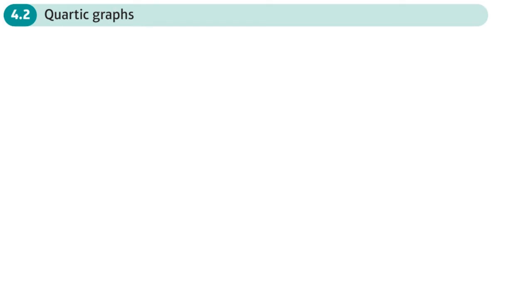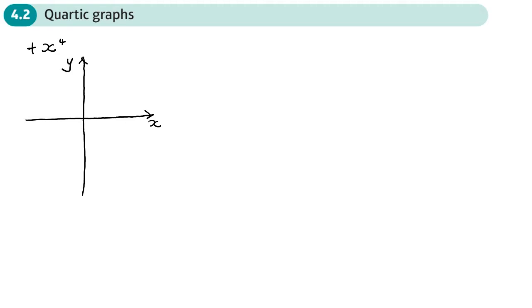This is the second section on graphs and transformations on quartic graphs. Quartic graphs are a bit like cubic graphs in that they're either U-shaped or N-shaped, maybe with a little bit of funny stuff going on in the middle. If the coefficient of the x to the power four term is positive, you get a U-shaped graph. If the coefficient is negative, then we have an N-shaped graph, just like with quadratics.